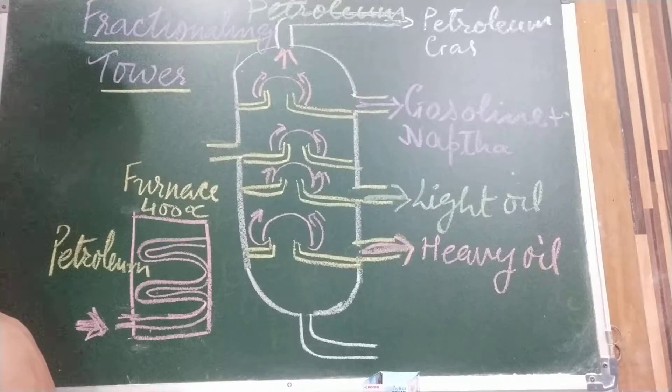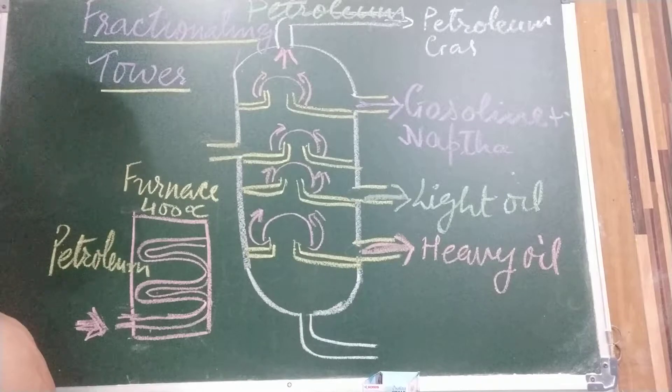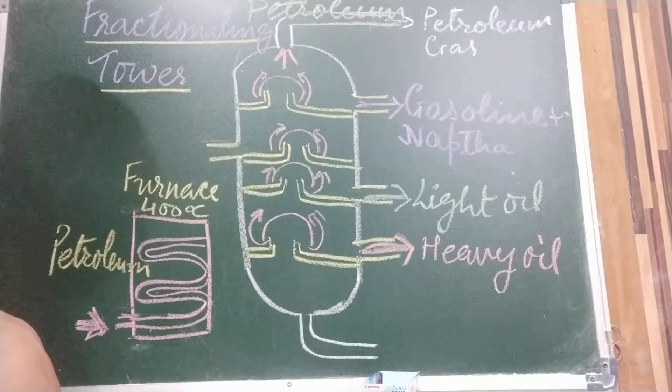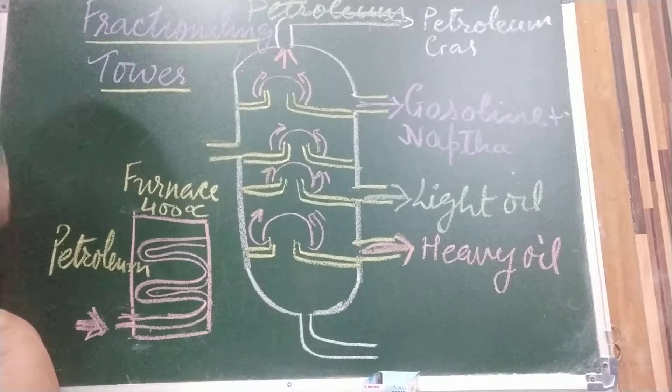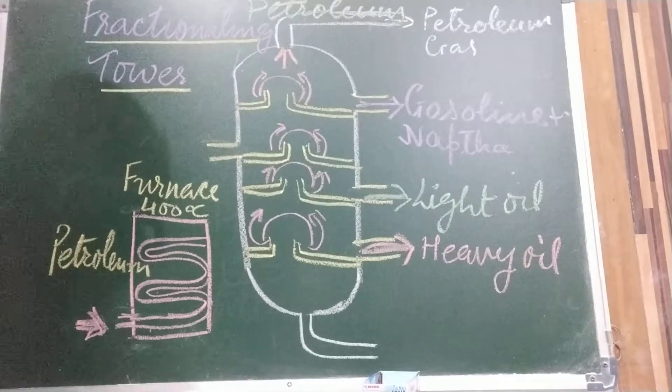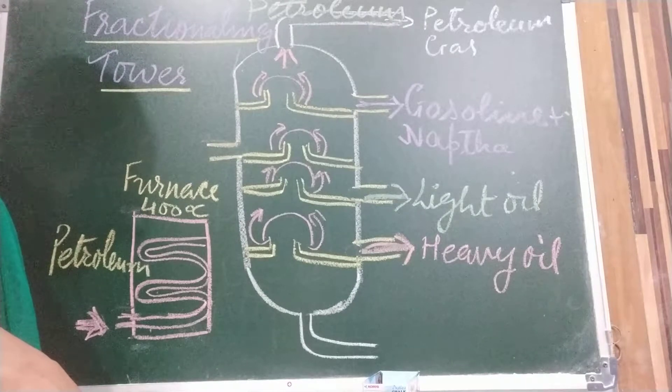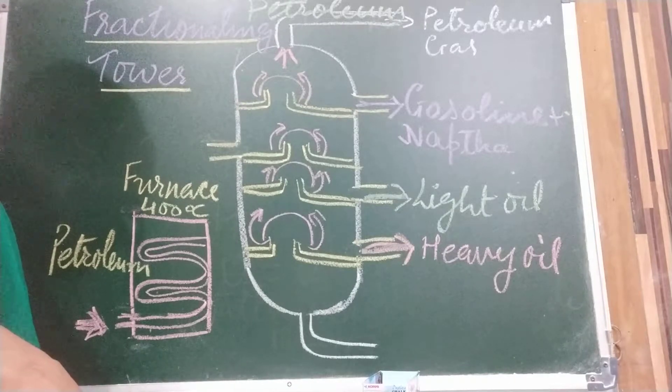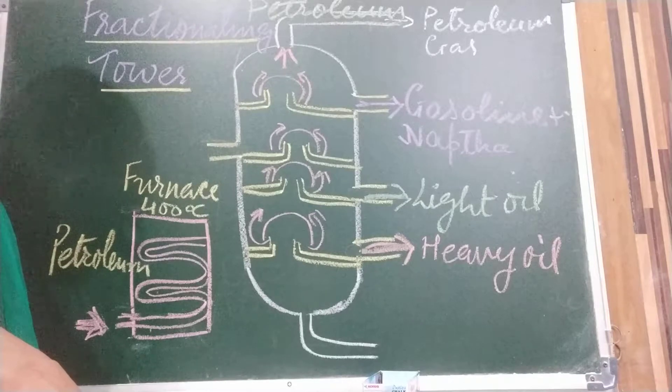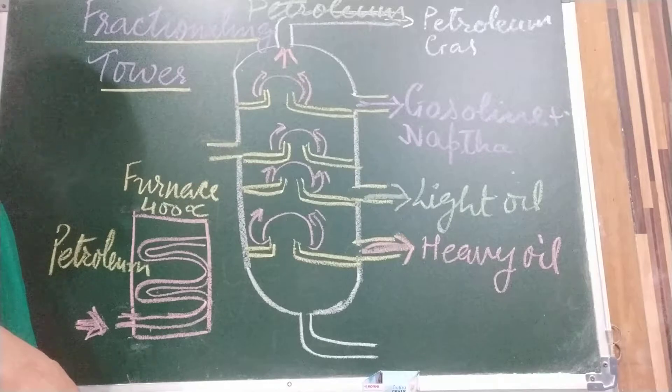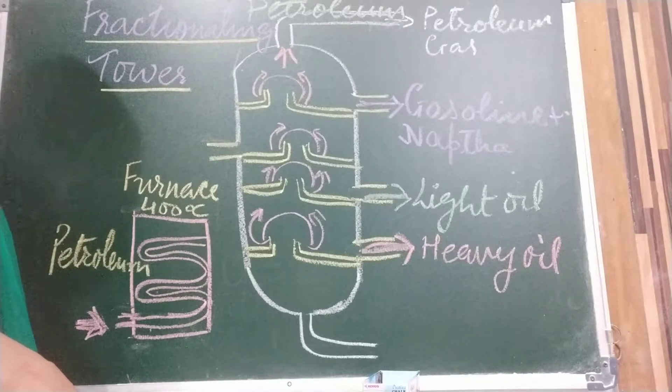Petroleum is believed to have formed over a period of millions of years from organisms that lived in the sea at that time. When these organisms died, their bodies settled on the seabed and got covered with sand and clay. Over millions of years, due to heat and pressure, heat and pressure changed the dead organism into petroleum hydrocarbons.